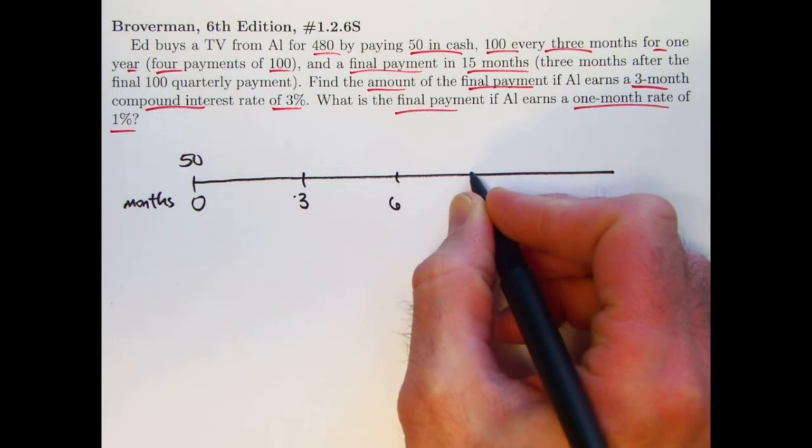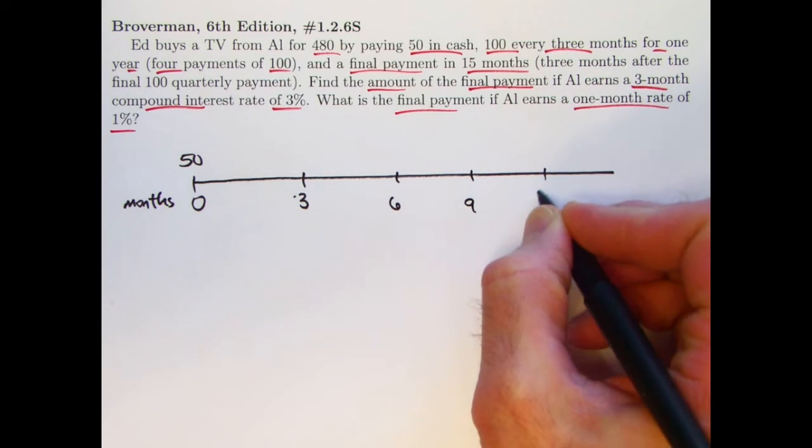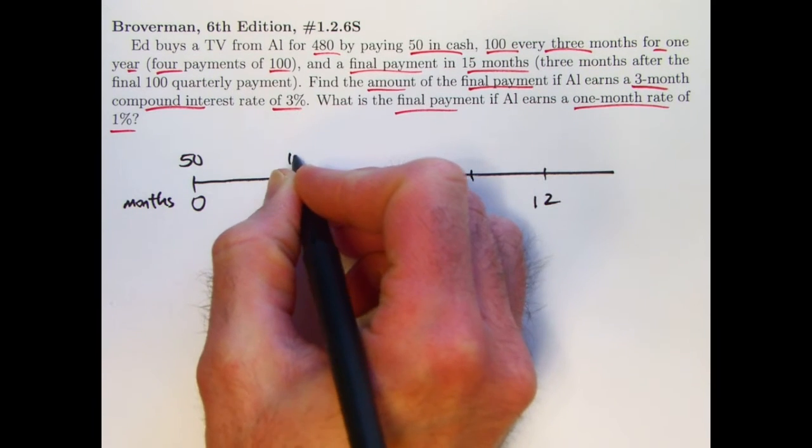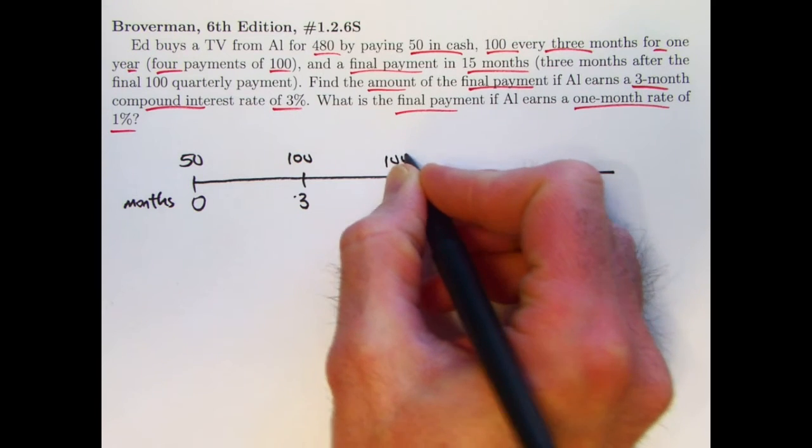And then there are these installment payments every three months. At time three, at time six, at time nine, at time 12, you pay 100. Ed pays 100 at those times.